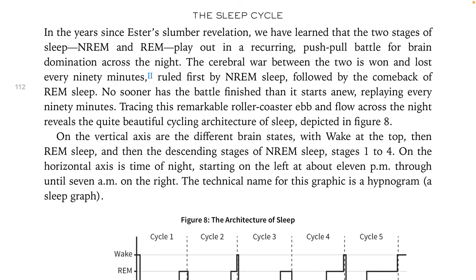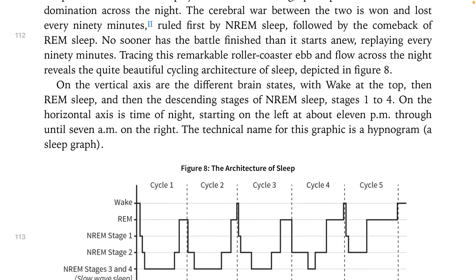The sleep cycle. In the years since Esther's slumber revelation, we have learned that the two stages of sleep — NREM and REM — play out in a recurring push-pull battle for brain domination across the night. The cerebral war between the two is won and lost every 90 minutes, ruled first by NREM sleep, followed by the comeback of REM sleep. No sooner has the battle finished than it starts anew, replaying every 90 minutes. Tracing this remarkable roller coaster ebb and flow across the night reveals the quite beautiful cycling architecture of sleep depicted in Figure 8.